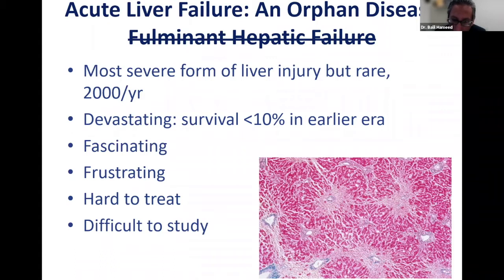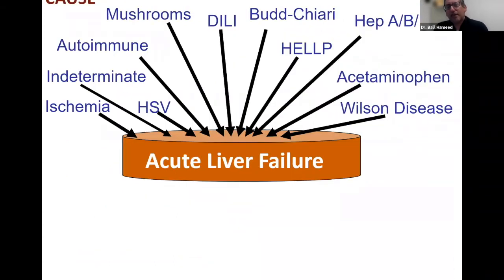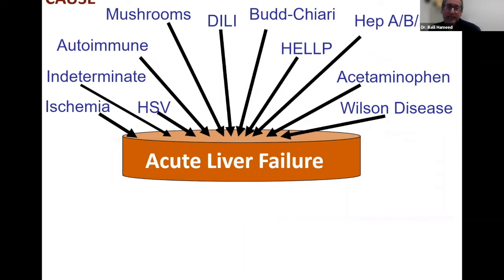I will share some data from our network. There are many causes that can cause acute liver failure — this may not be a complete list, but these are the common things we see in the U.S. As I mentioned, the most common cause in the U.S. is acetaminophen.